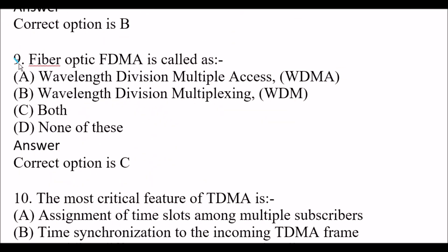Next question: Fiber optic FDMA is called as — Option A: wavelength division multiple access (WDMA). Option B: wavelength division multiplexing (WDM). Option C: both. Option D: none of these. The right answer is Option C, both — wavelength division multiple access (WDMA) as well as wavelength division multiplexing (WDM).